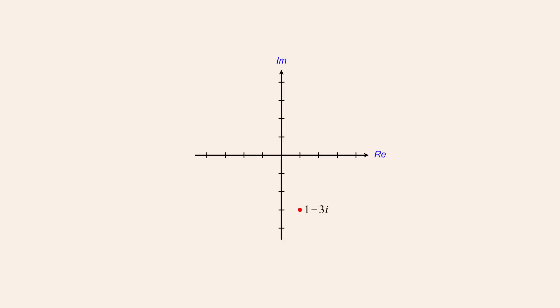Therefore, if we wish to subtract 1 minus 3i from 3 plus 2i, we start with the vector for 3 plus 2i and then add a vector of the same length as the vector for 1 minus 3i but pointing in the opposite direction. The result is 2 plus 5i. As we saw with addition, this result is identical to the result we previously obtained arithmetically. And always remember that since subtraction is not commutative, the order in which the vectors are subtracted is important.